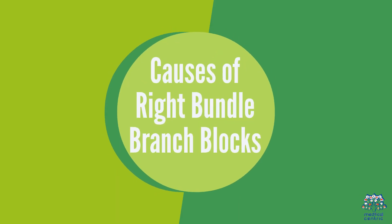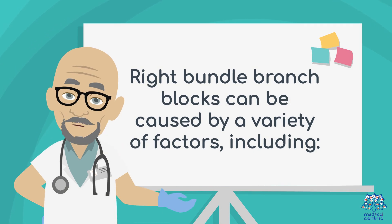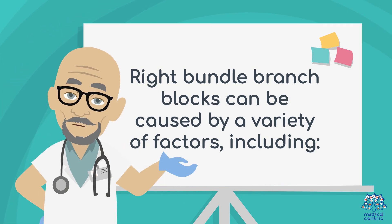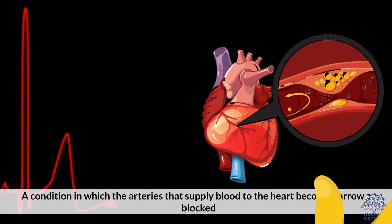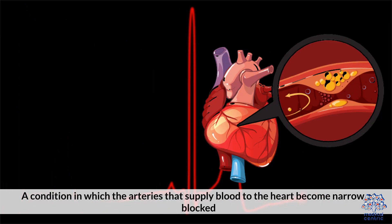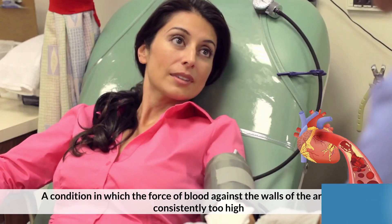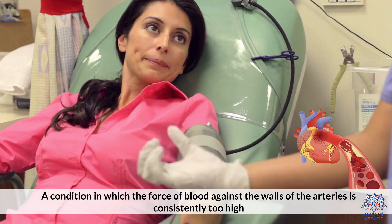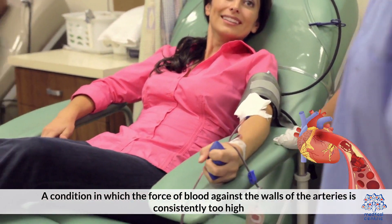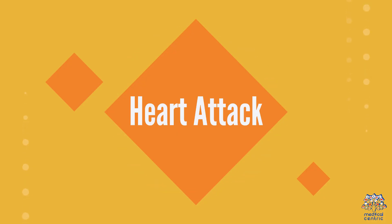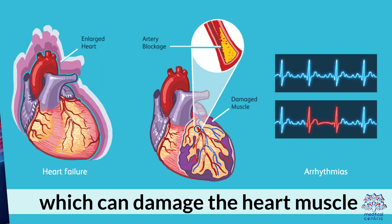Right Bundle Branch Blocks can be caused by a variety of factors, including: Coronary artery disease, a condition in which the arteries that supply blood to the heart become narrow or blocked. High blood pressure, a condition in which the force of blood against the walls of the arteries is consistently too high. Heart attack, a condition in which blood flow to the heart is blocked, which can damage the heart muscle.